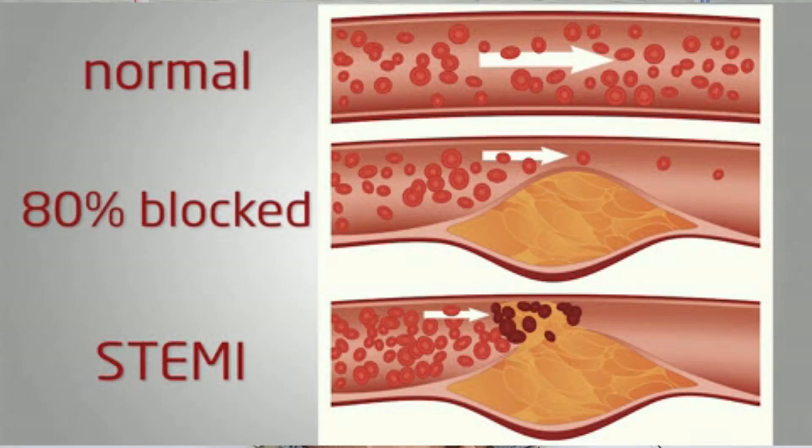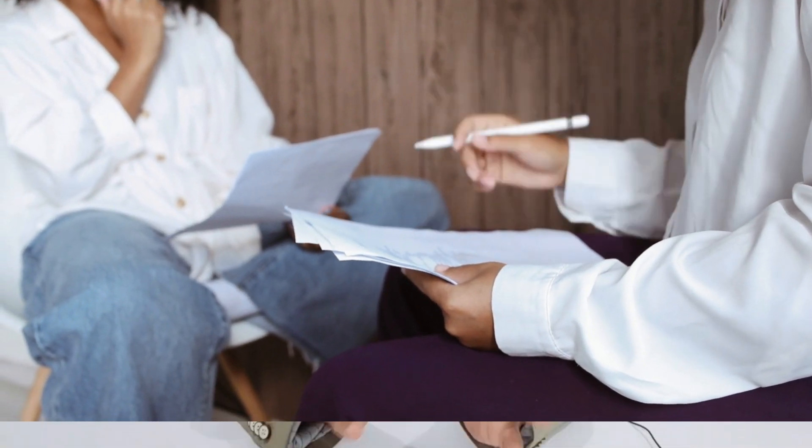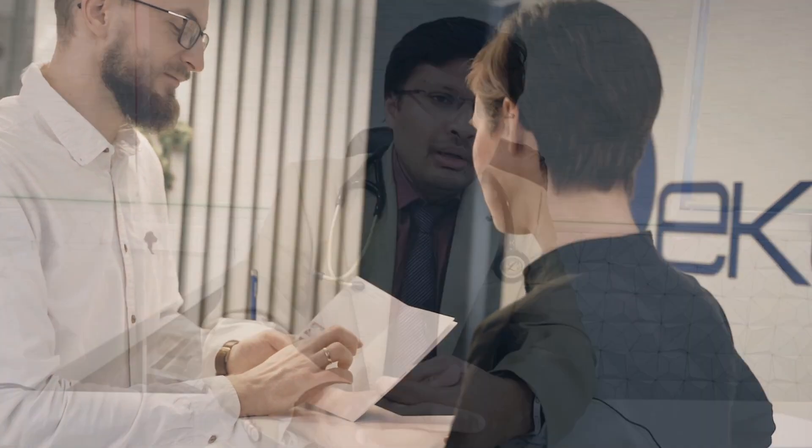Coming back to the topic. A lot of times it happens that you do an angiography and there is a blockage around 70 to 80 percent or 90 percent on the table. The doctor advises you that it's better to undergo an angioplasty, and if you agree, you get the angioplasty done there and then. But sometimes it becomes very problematic for the patient — they cannot decide in such a short time. Sometimes they take several hours or even days to decide, and people tend to feel that they are being blackmailed by the doctor to get the angioplasty on-table.